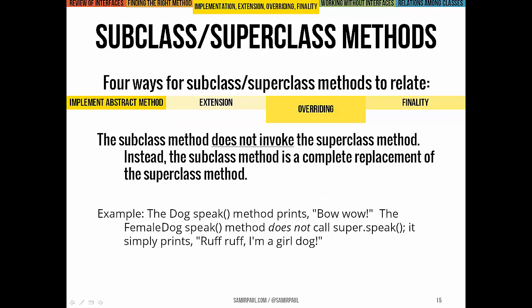A subclass method can also completely override a superclass method. In this case, the subclass method doesn't call the superclass method at all — it's a total replacement of the superclass method. You can see an example of this in the code shown here.